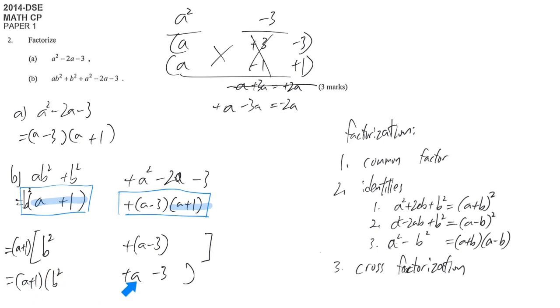This one, even though we have b², b and a are not the same thing. So we can't further factorize. Then you can consider this one is your final answer in question 2.